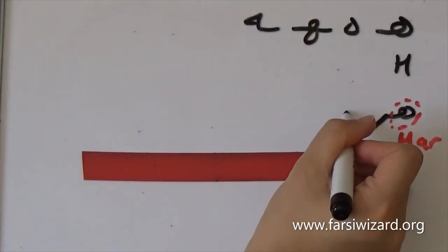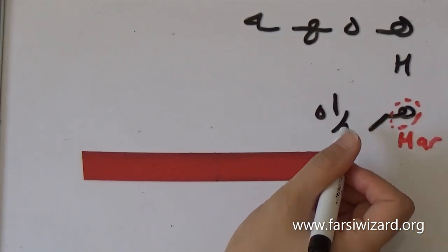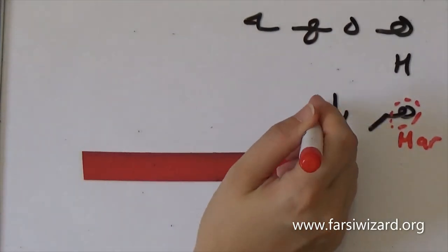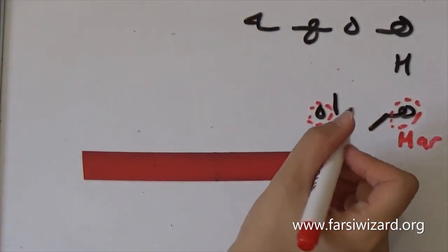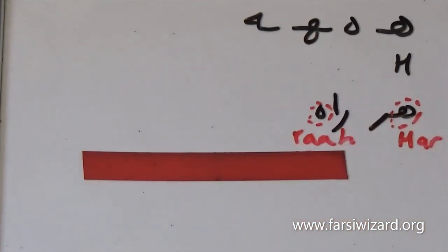The second word, the second example, is ra, which means path or way, and here the letter he has appeared at the end of the word and it is not connected to the previous letter, ra.